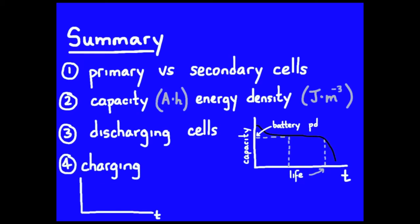For a secondary cell, the charging curve might look something like this. I could plot potential difference on the vertical or capacity and time. And I use an LED and an ammeter to help us determine when to stop charging. You can overcharge a secondary cell and cause damage.